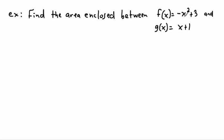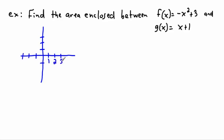This is a quadratic, so it's a parabola. It opens downwards because of the minus sign, and the plus 3 means it's been raised up by three. So if I quickly sketch this, I'd put the vertex at about y equals 3, and it opens downwards like that. This is the graph for f of x.